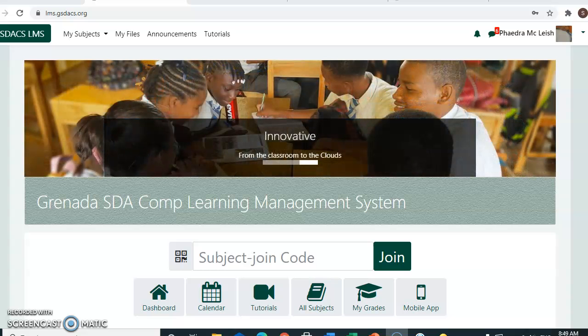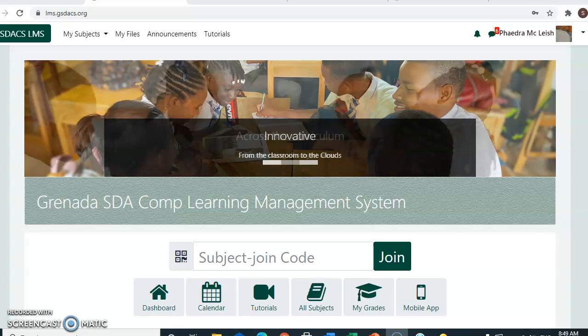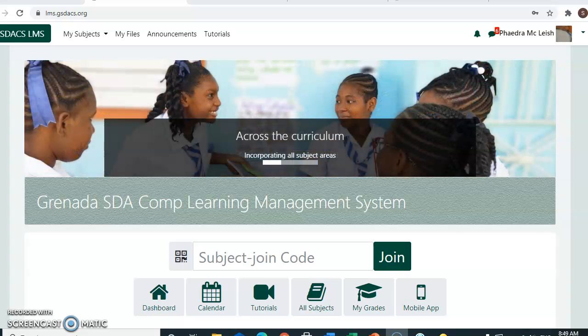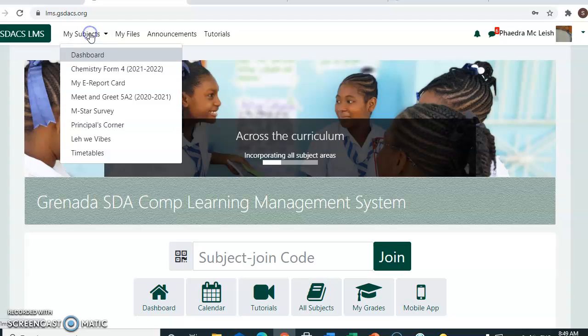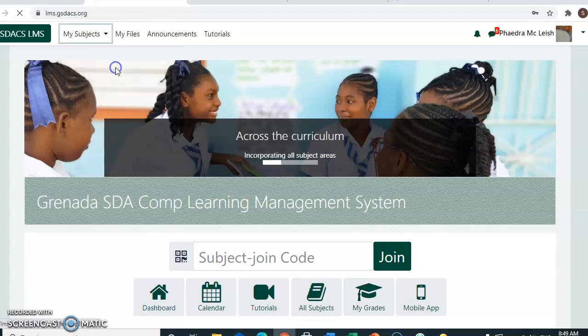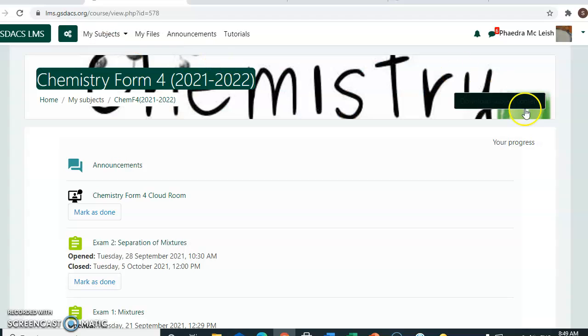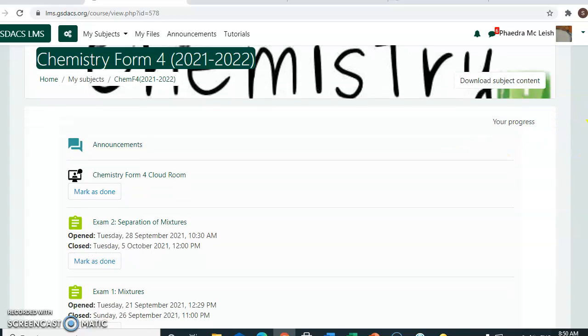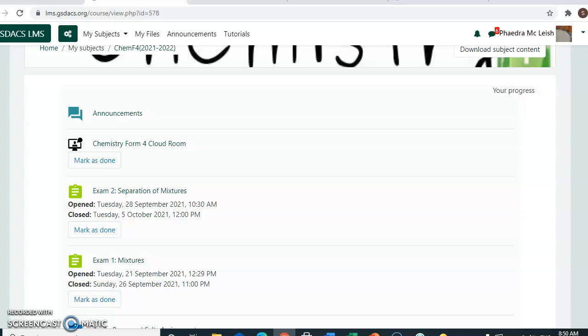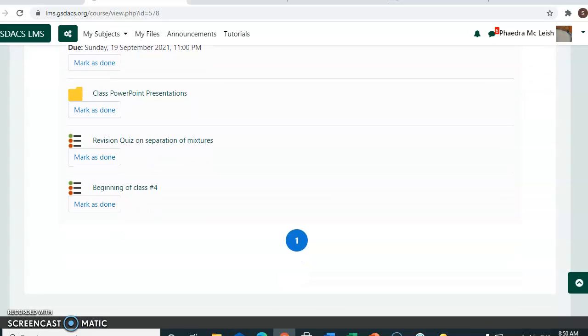For this tutorial, we're going to look at the active quiz from the student's point of view. This student is in my Chemistry Form 4 class, and we have entered the Cloud Room to start the class, and we are going to start with the active quiz.